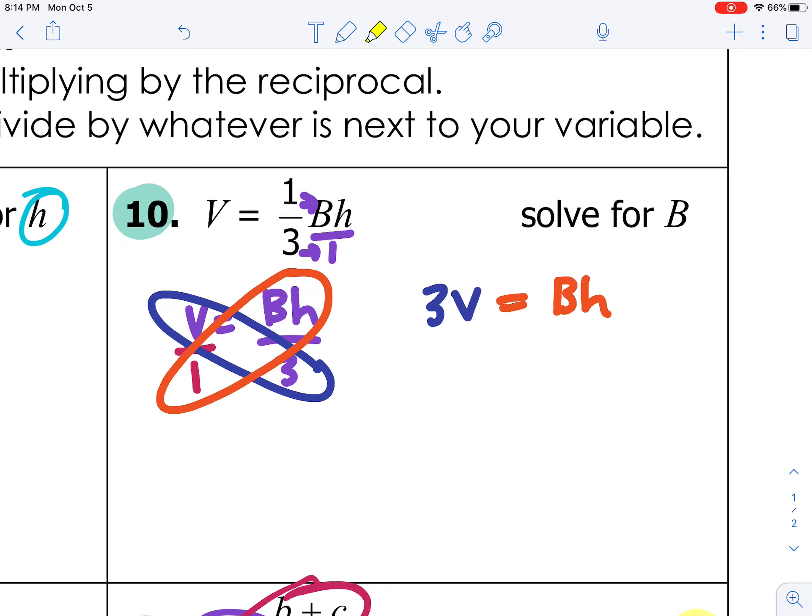1 times BH is BH. So I set that equal to BH. Then, now that the fractions are gone, let's solve for B. B is being multiplied by H. So to solve for B, I need to divide both sides by H. Therefore, 3V over H equals B, or B equals 3V over H.